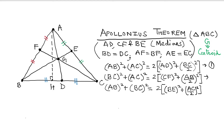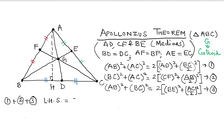Analogously, I have written the second and third equations as well. These three equations represent the relationship between the sides and the medians formed by those sides. Now, adding all three equations together, on the left-hand side we are going to get twice the sum of the squares of the three sides.